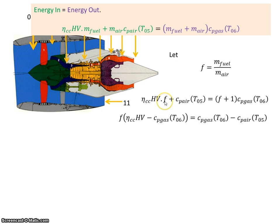So I can say F times eta_cc HV minus F times Cp_gas T06, so bring that to one side, and I'm left with Cp_gas T06, this guy here, and Cp_air T05 there. Then calculate the fuel to air ratio, just divide one by the other.